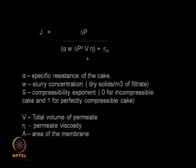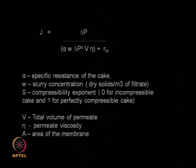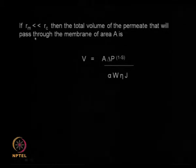In addition, we have terms like V (the total volume to filter), eta (viscosity), w (the slurry concentration), and alpha (the specific cake resistance) — from Darcy's equation studied in earlier classes. There is also R_m, the resistance offered by the membrane itself. Unlike a filter cloth, membranes may offer resistance to flow because the pore sizes are very small. If the membrane resistance is very small, a simplified equation gives the volume permeating through the membrane area. This is the governing equation determining permeate flow.